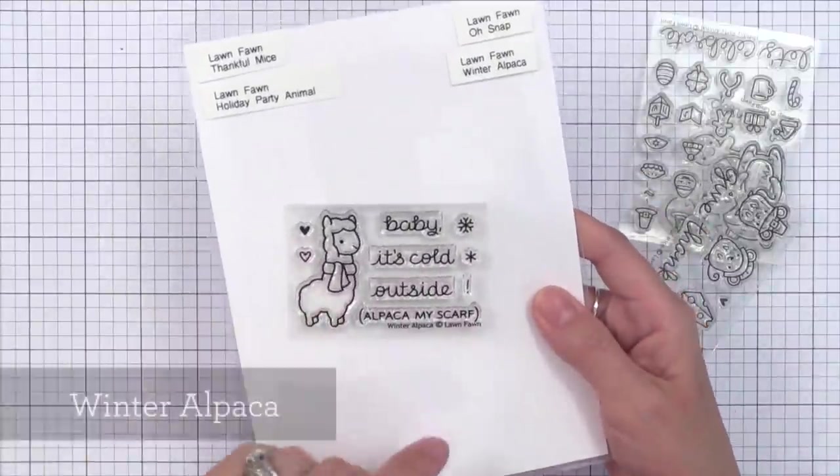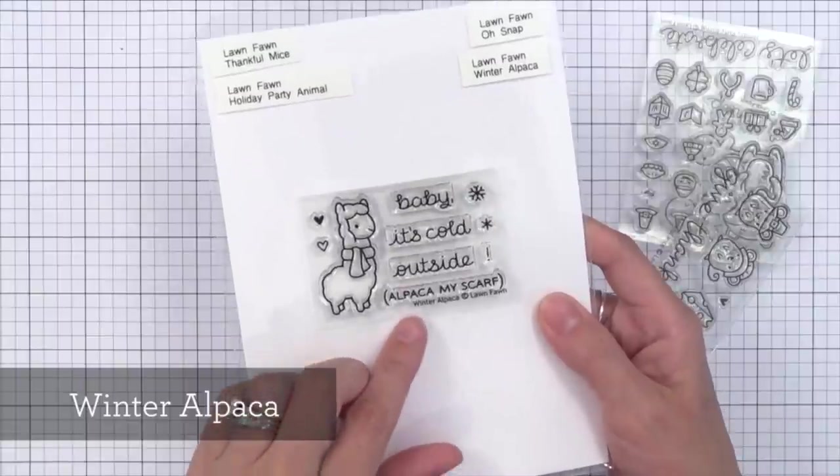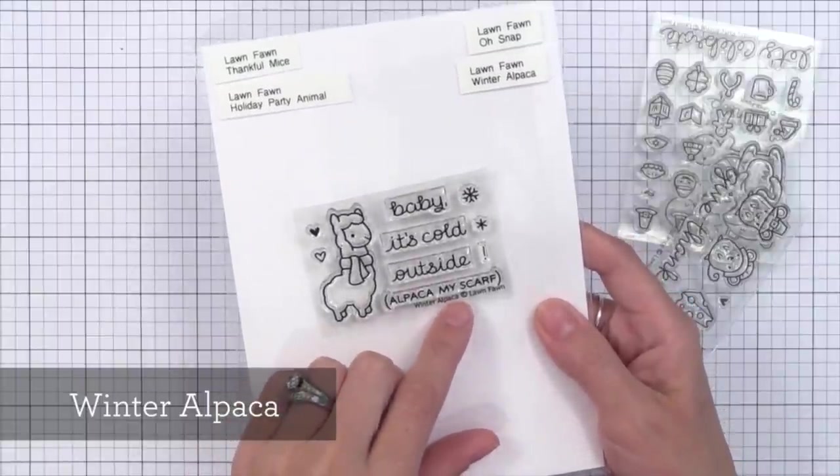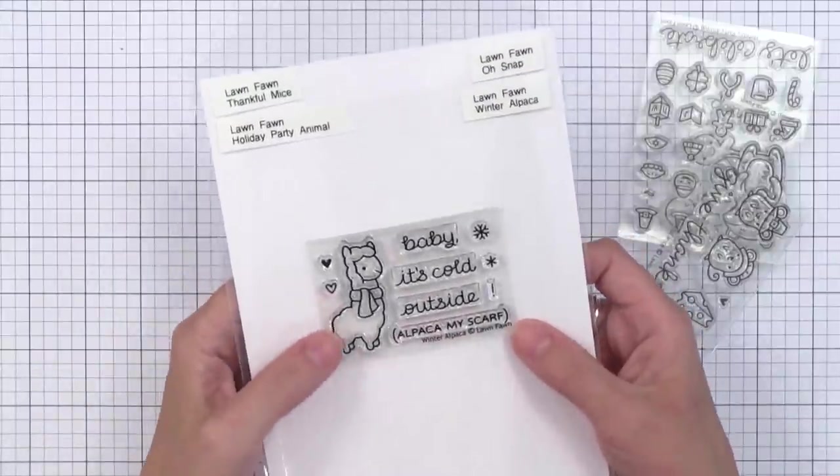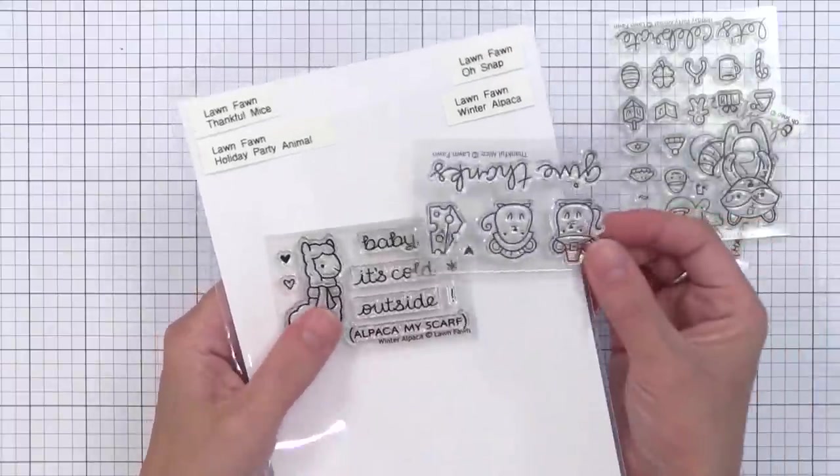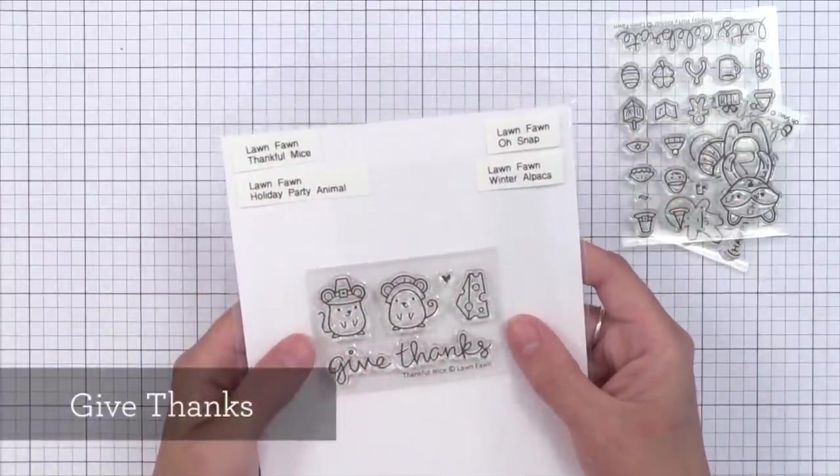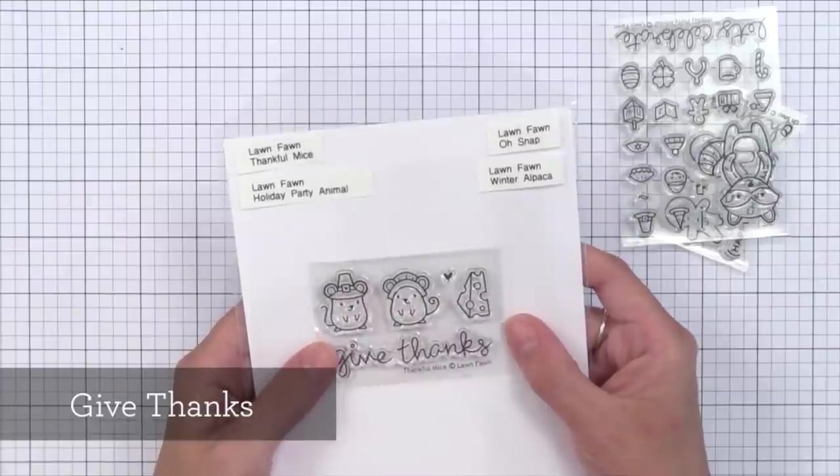Next Lawn Fawn has many tiny stamp sets which I think are great because the price point is lower. This one's fun. It says, 'baby it's cold outside, alpaca my scarf.' So this is the winter alpaca stamp set and I think this one's going to be very popular since it's so much fun. Then there is the adorable Give Thanks stamp set. This one's super tiny and I think it'd be great for simple cards.